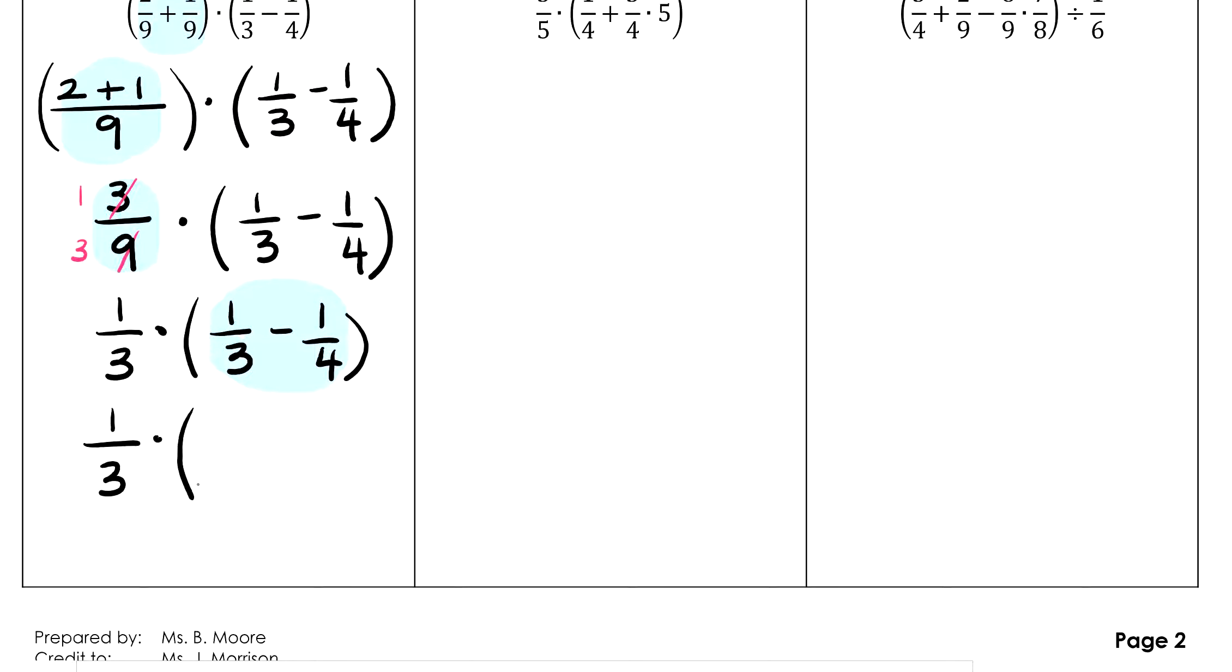Now we'll have 1/3 times 4/12 minus 3/12. When we evaluate this, we'll have (4 - 3)/12, which is 1/12.